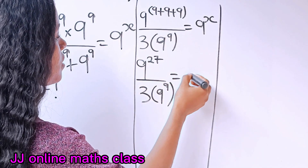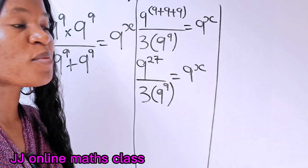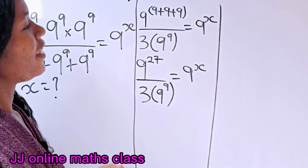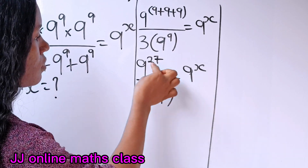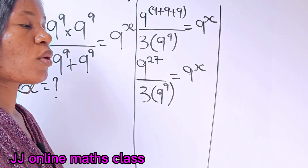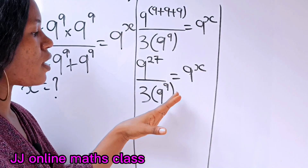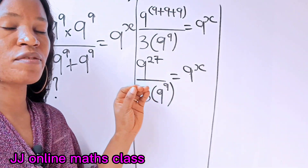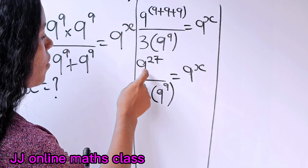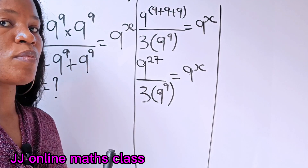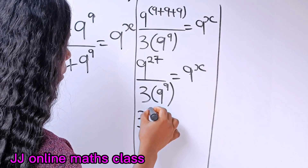Now let's convert to the same base, because this is an exponential question and the best approach is to put everything in the same base. We can write nine as three to the power of two, so we'll rewrite the expression as three to the power of two, raised to the power of 27.